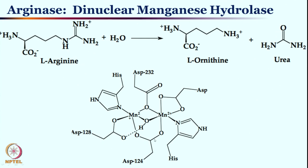There is a bridging aspartate between the two manganese centers, and another aspartate bridging through only one oxygen atom of the carboxylate. This shift from bicoordinate to monocoordinate bridging can happen frequently — sometimes this bicoordination to monocoordination occurs to provide space for the incoming substrate. There is another histidine on both manganese sites, and the other manganese center has monocoordination as well as hydrogen bonding through the hydroxy bond.